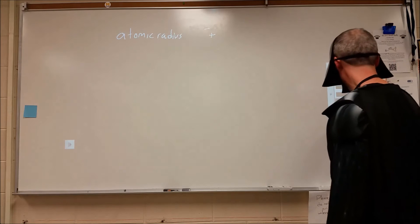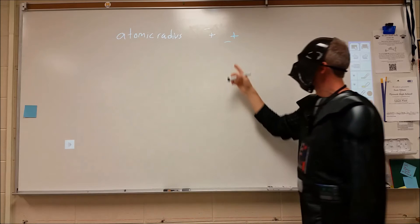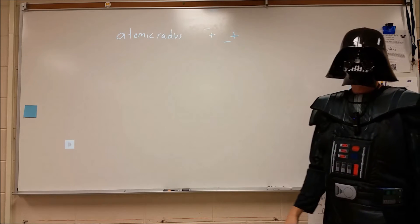And the way we do that is we take a second atom, put it in a bonding interaction with the first one, and we measure the distance between the two nuclei.